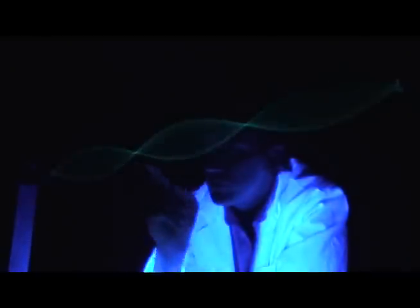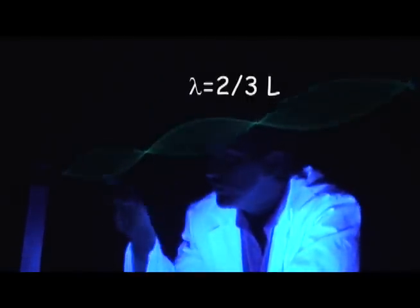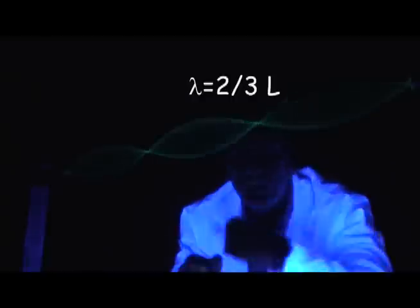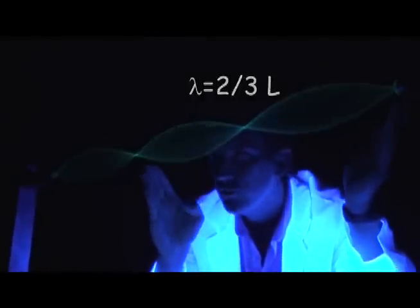This is the third harmonic. You'll notice there are now three antinodes, of course, and two nodes. You'll also notice that the wavelength is two-thirds of the total length. That this is one full wavelength.